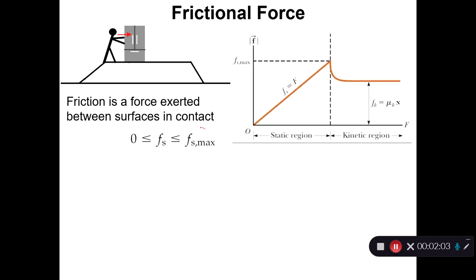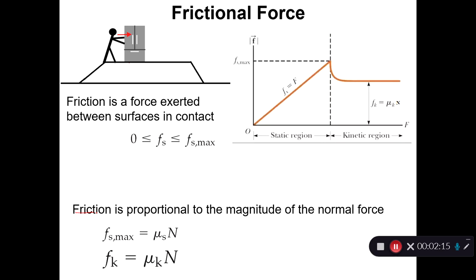In the static region, the frictional force lies between zero and the maximum static friction force. Every frictional force in the static region falls within these two bounds.